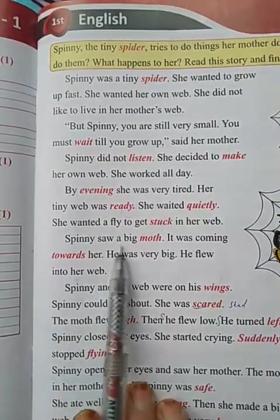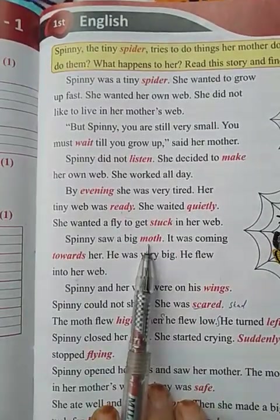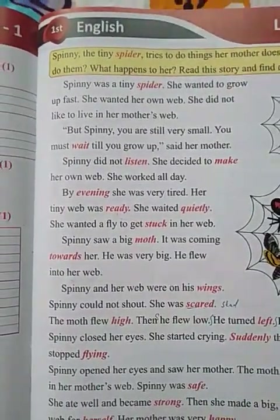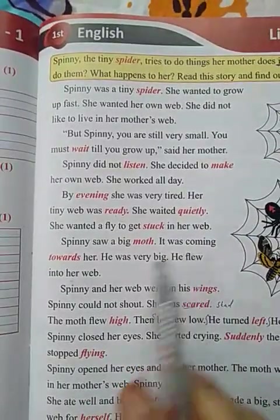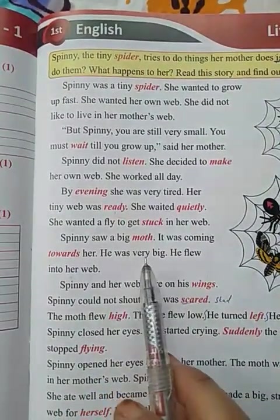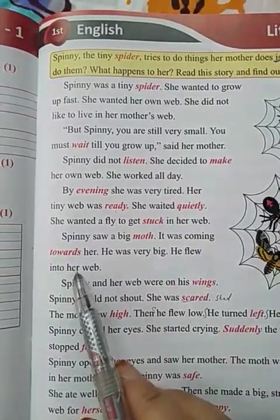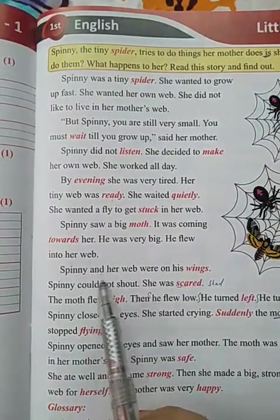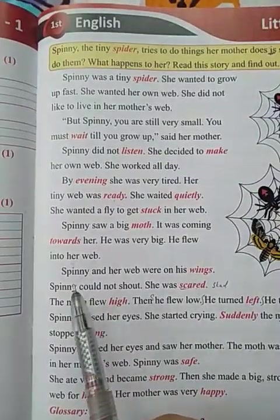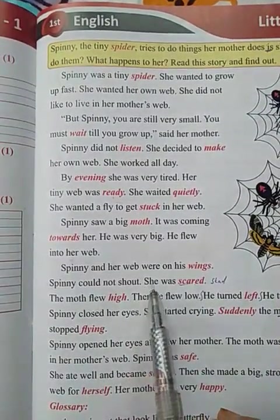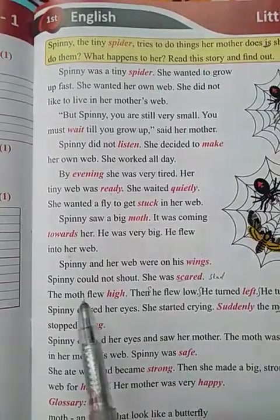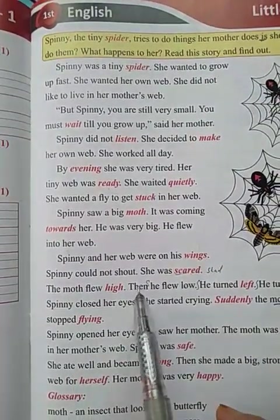Spinny saw a big moth — a moth is an insect. It was coming towards her. It was very big. It flew into her web. Spinny and her web were on its wings. Spinny could not shout. She was scared.